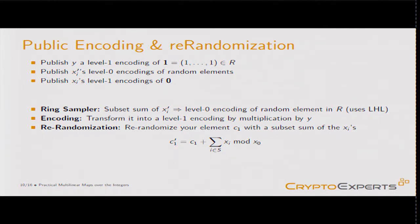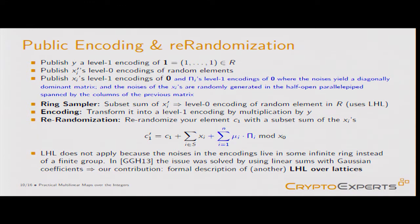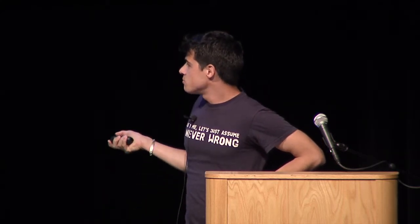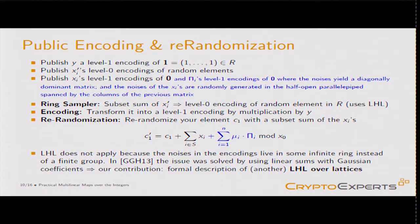You want to apply the leftover hash lemma so that an adversary cannot distinguish. It's slightly more complicated because we can't apply the leftover hash lemma directly — the noises live in an infinite ring and not mod something. GGH ran into the same issue and solved it using a linear sum with Gaussian coefficients. We solved it differently by proposing the leftover hash lemma over lattices, which requires another subset sum and noise drawn from a specific distribution. But their approach can also be applied to our scheme.